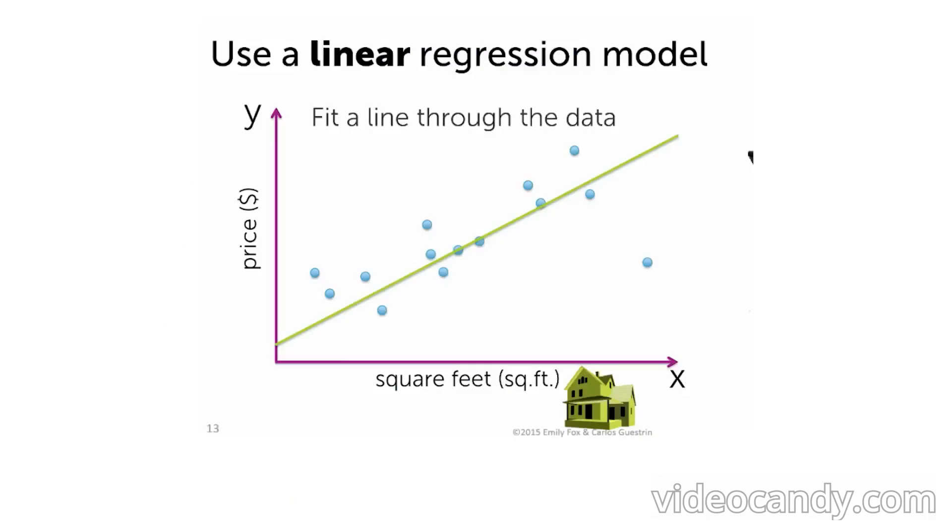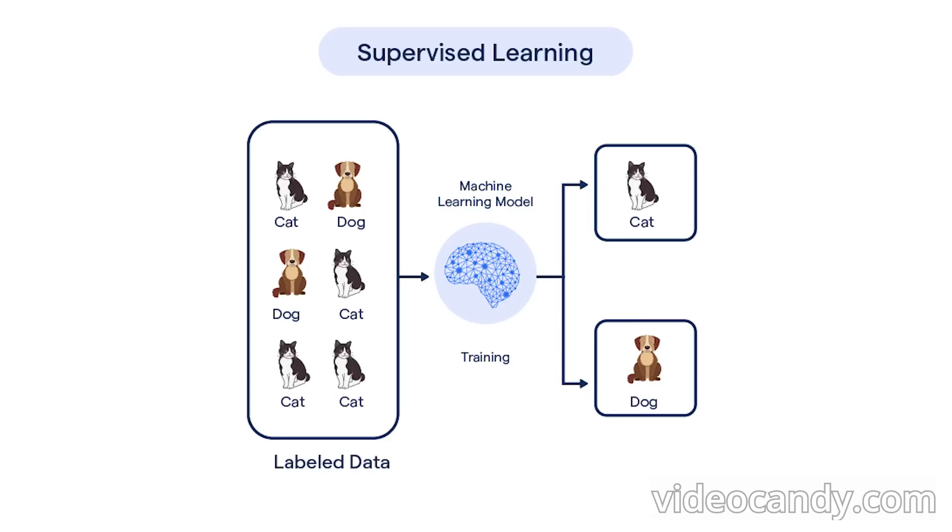Examples could be predicting the price of a house, the output variable, based on features of the house, say square footage, location, year of construction, etc., or categorizing an object as a cat or a dog, the output variable or label, based on features of the object, say height, weight, size of the ears, color of the eyes, etc.